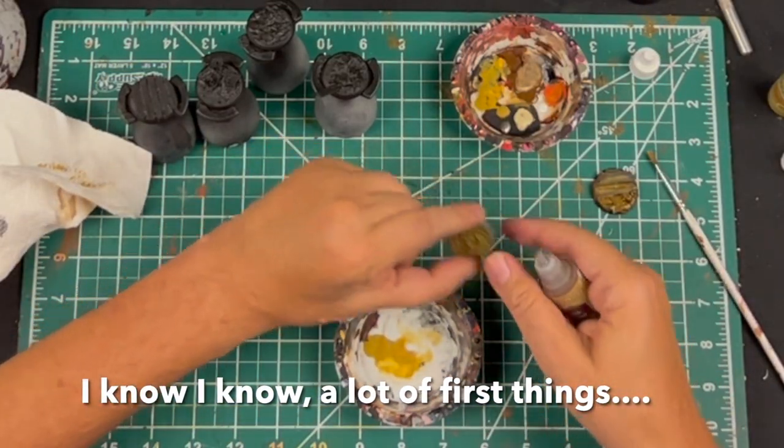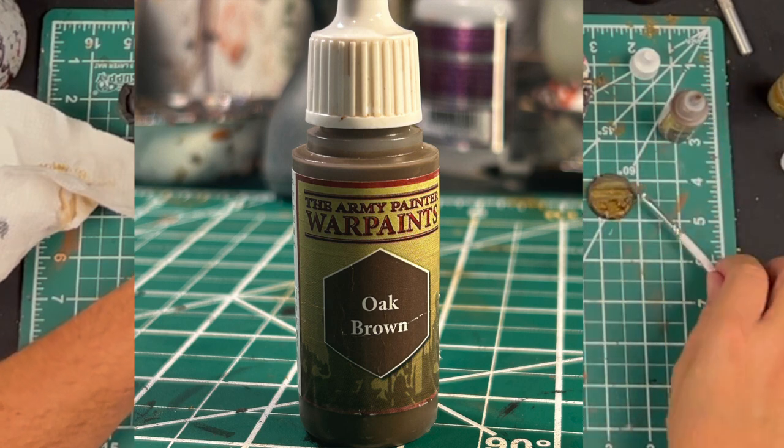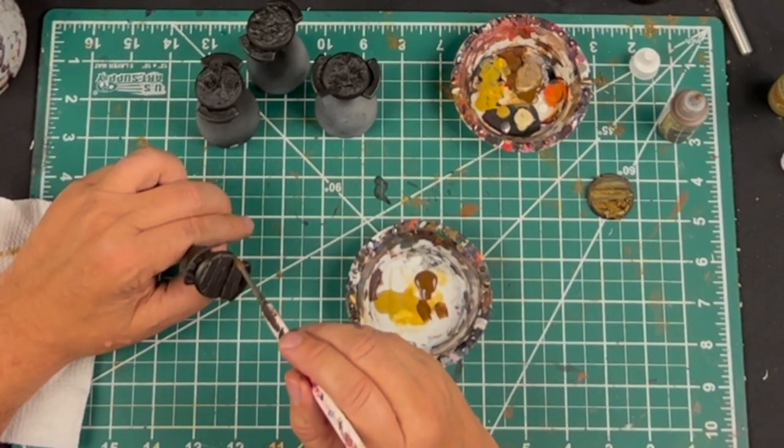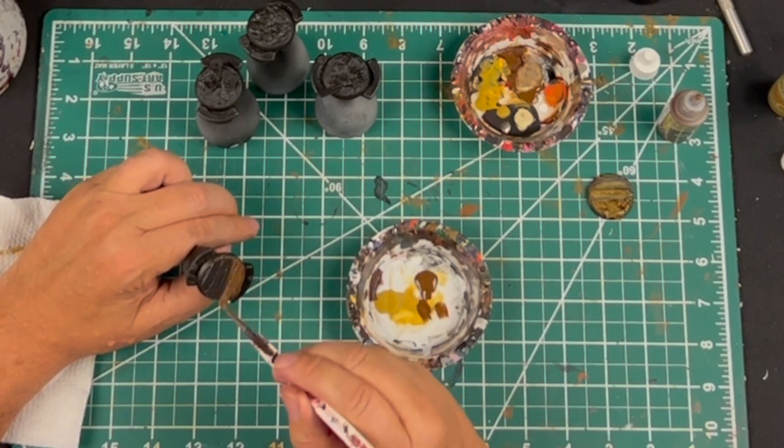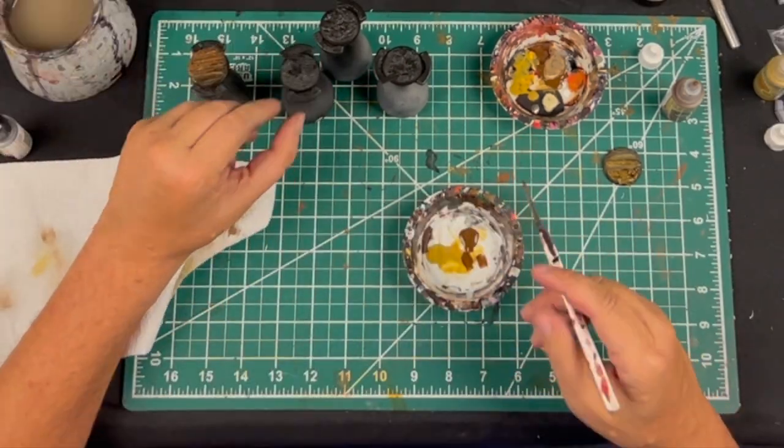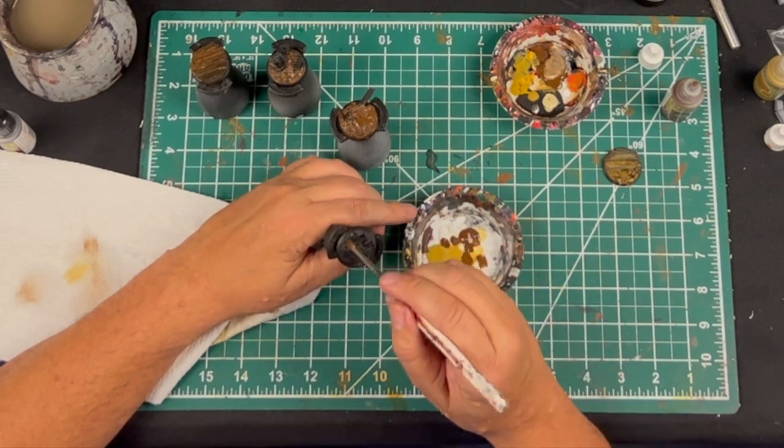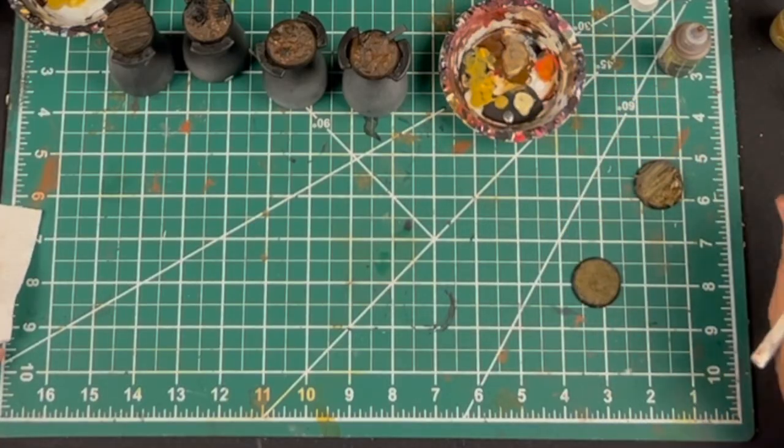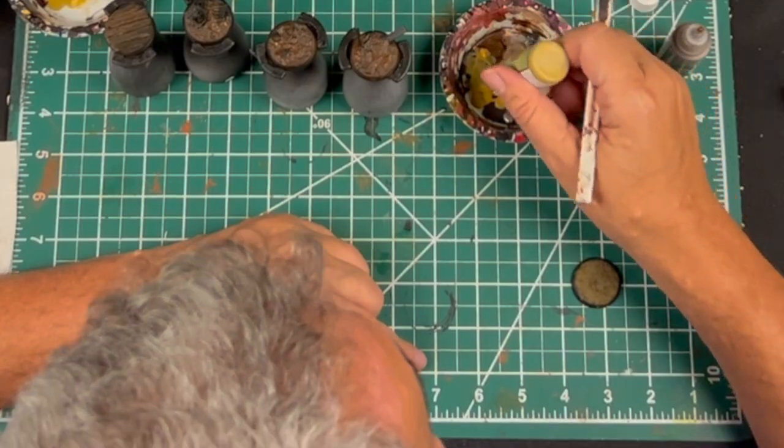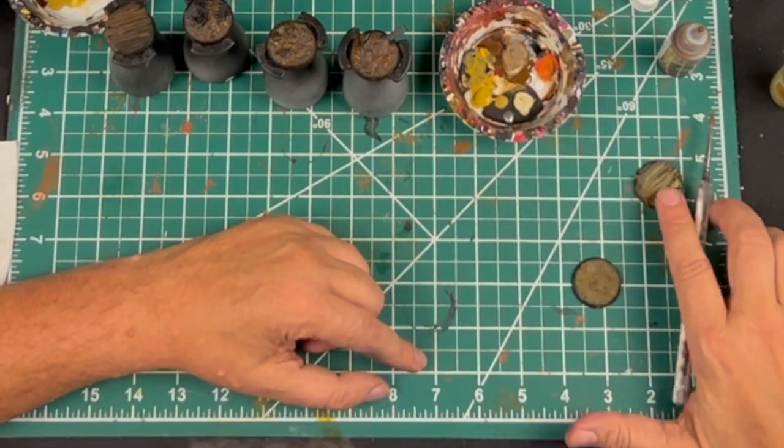The first thing we need to do is start off with a base coat. We're going to use Oak Brown from Army Painter. Use an old craft brush. Paint the whole thing Oak Brown. Next, we'll do a desert yellow and brown mix.